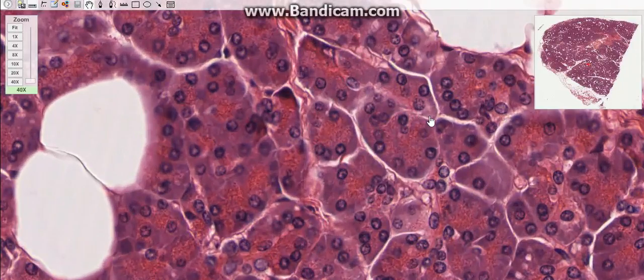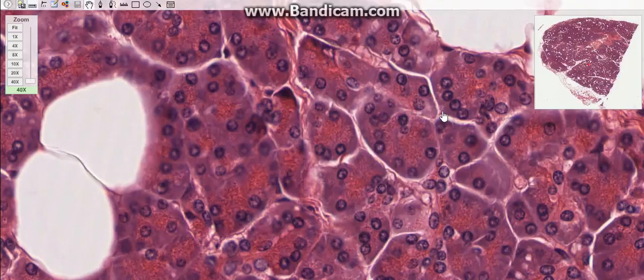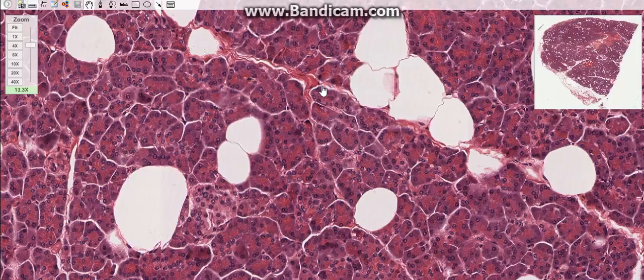These cells secrete fluid and bicarbonate ions of the pancreatic juice. The intercalated ducts are short and drain into intralobular ducts. The intralobular ducts are lined by simple cuboidal epithelium.